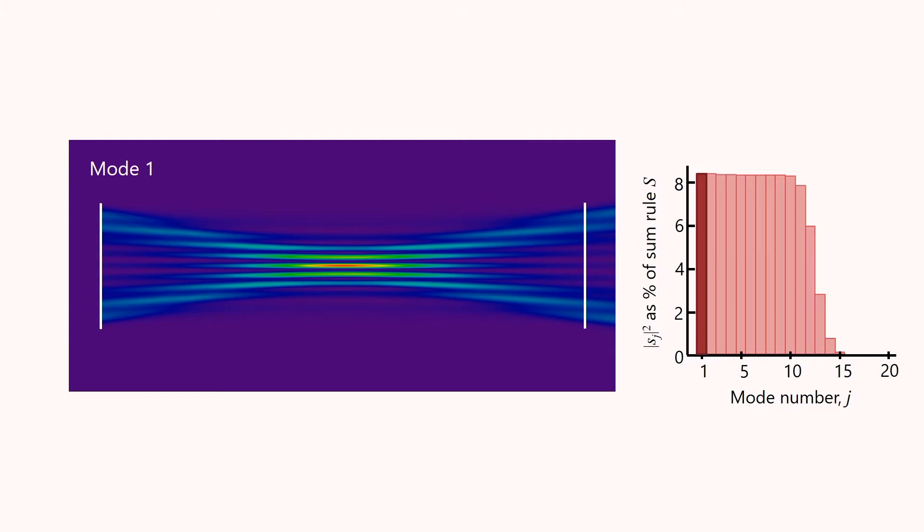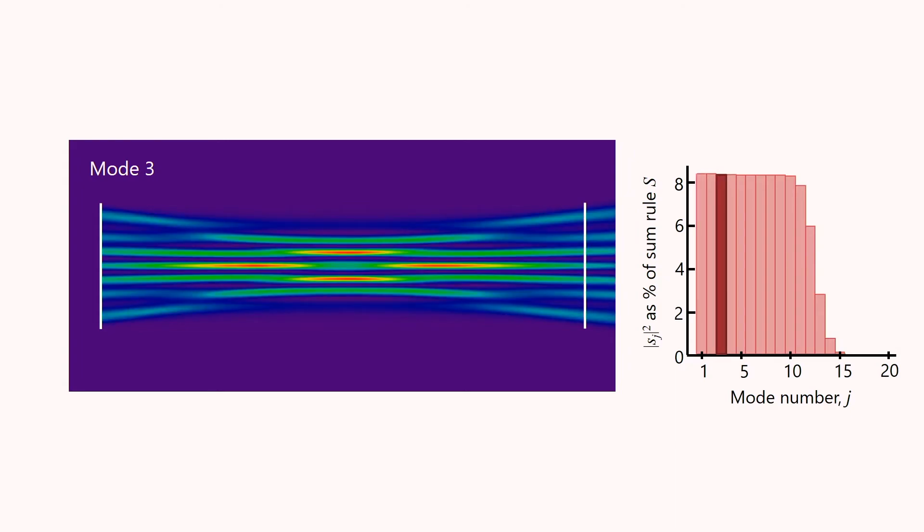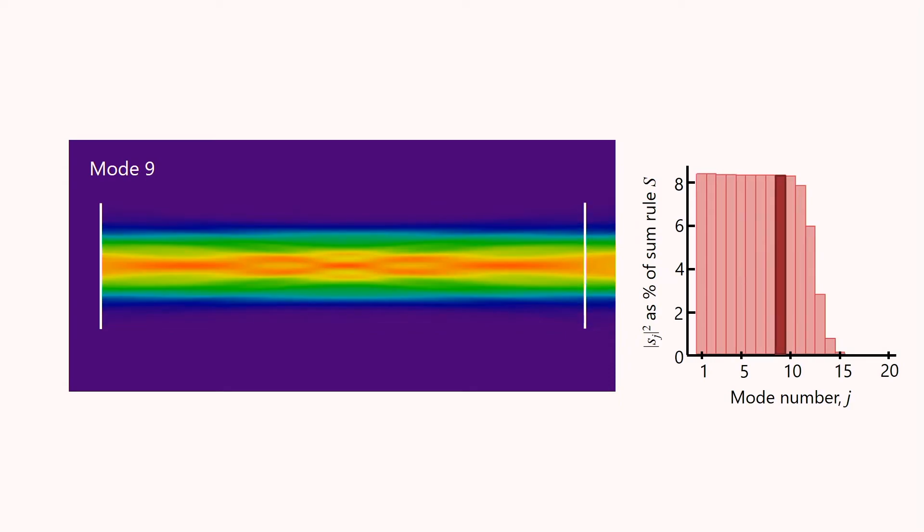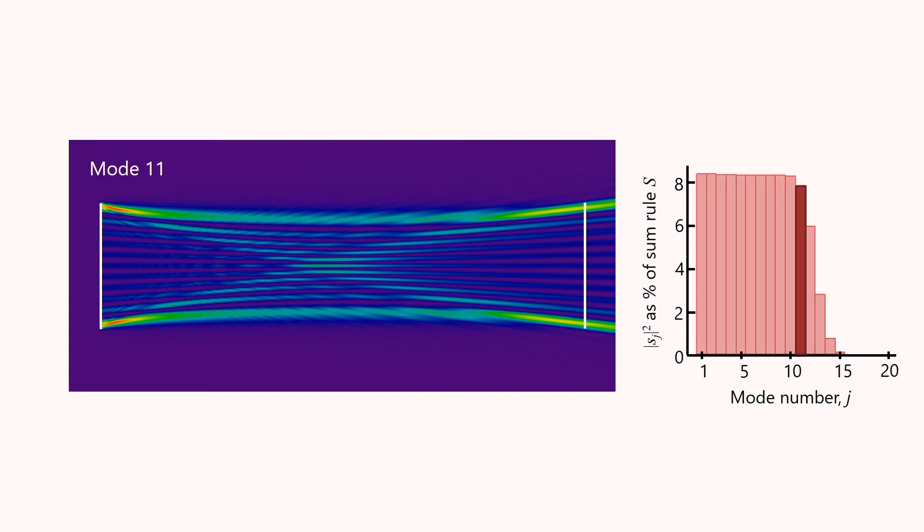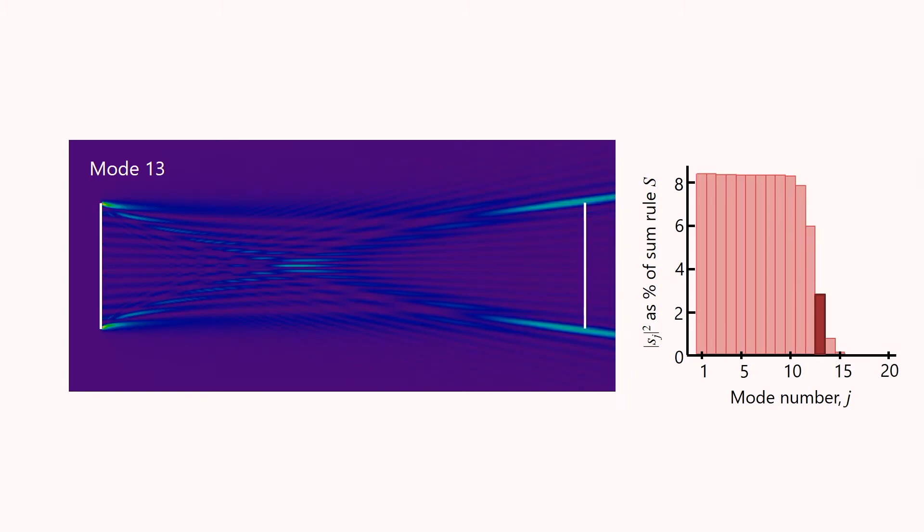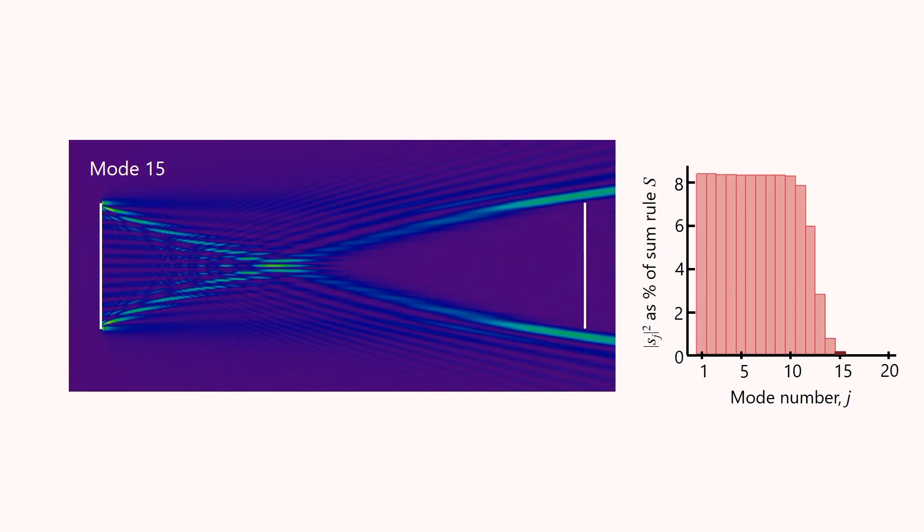So let's look at a set of these modes, one after the other. I'm going to show you all of the odd modes in this system. So here's the most strongly coupled one. And on the right, we're showing the magnitudes of the power coupling strength, so the modulus squared of the singular values, as a percentage of the sum rule. So this first one takes over just 8% of the sum rule. The next one, mode 3, also takes a rather similar fraction of the sum rule. The next one, similarly. Mode 7, mode 9. And by mode 11, we're just starting to see that the wave is missing the receivers. So here, the wave is just about to begin to miss the receivers. And we see a slight fall off in the strength of the coupling. There are more modes here. Here's mode 13. And we see this phenomenon of the wave missing the receivers, getting stronger.